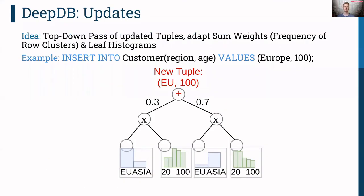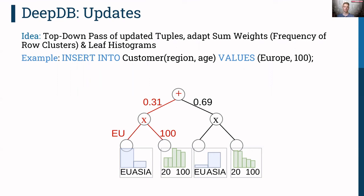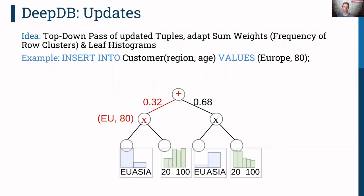Relational sum-product networks also support efficient updates. The idea is a top-down pass of updated tuples through the model: weights are adapted at sum nodes and leaves are updated accordingly. For example, to insert a customer from Europe, the tuple belongs to the left row cluster of older European customers, so we increase the left weight, split the tuple at the product node, and update the histogram. For a new subsequent insertion, the process repeats: we increase the sum weight, split at the product node, and update the leaf histograms. The updated RSPN now represents the database with the two additional customers inserted.